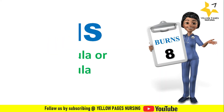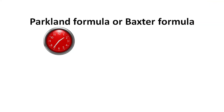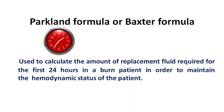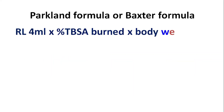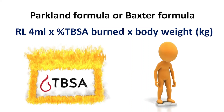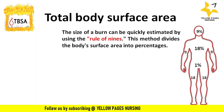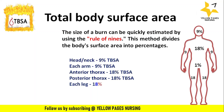Next is the Parkland (Baxter) formula, used to calculate replacement fluid for the first 24 hours in burn patients to maintain hemodynamic status, especially in second or third degree burns. The formula is: Ringer's lactate 4 mL × % total body surface area (TBSA) burned × body weight in kg. Burn size is estimated using the Rule of Nines: head/neck = 9%, each arm = 9%, anterior thorax = 18%, posterior thorax = 18%, each leg = 18%, perineum = 1%.